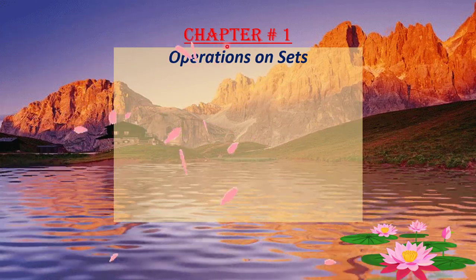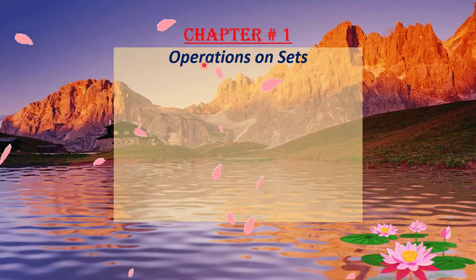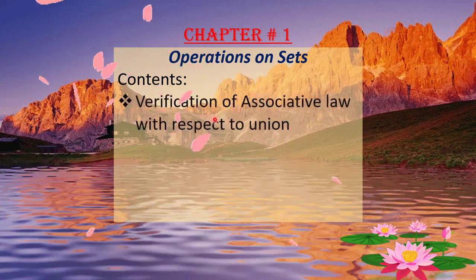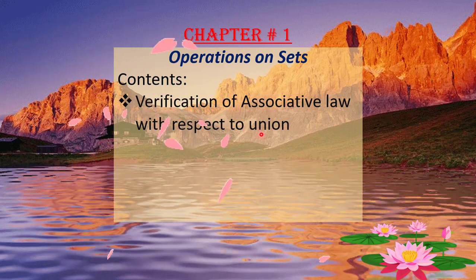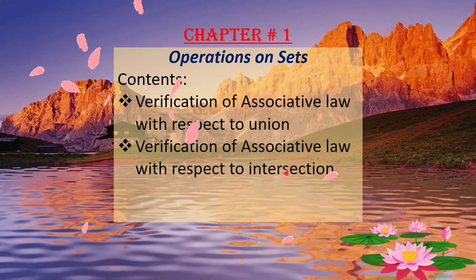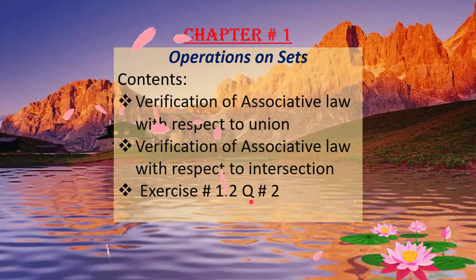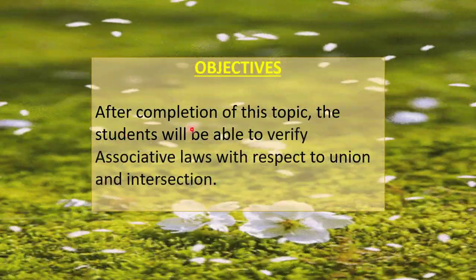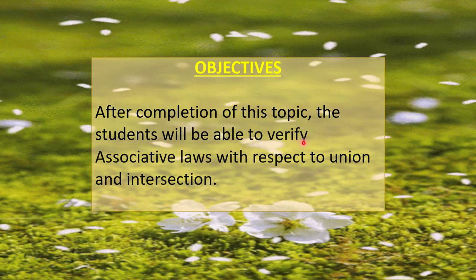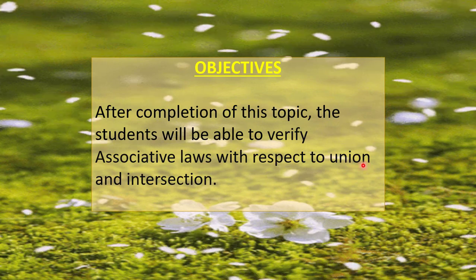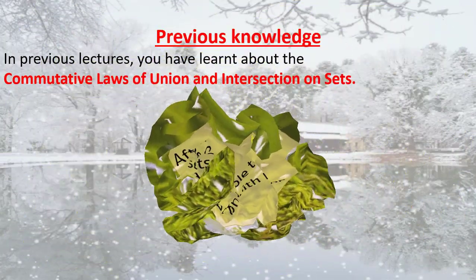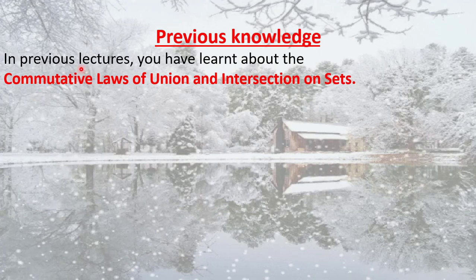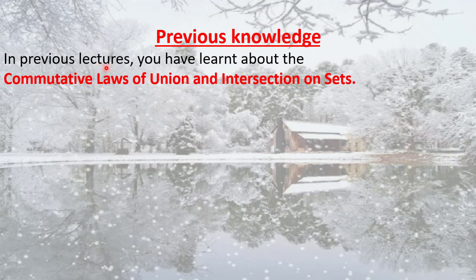As you already know, we are studying chapter number 1, that is Operations on Sets. The contents include: verification of associative law with respect to union, verification of associative law with respect to intersection, and Exercise 1.2 Question number 2. After completion of this topic, students will be able to verify associative laws with respect to union and intersection.